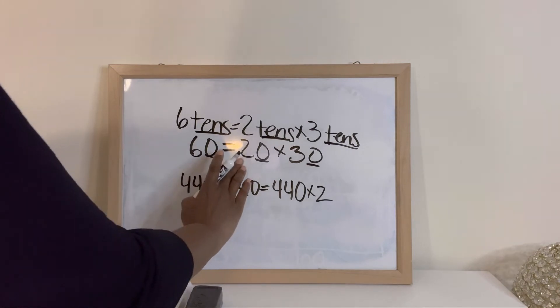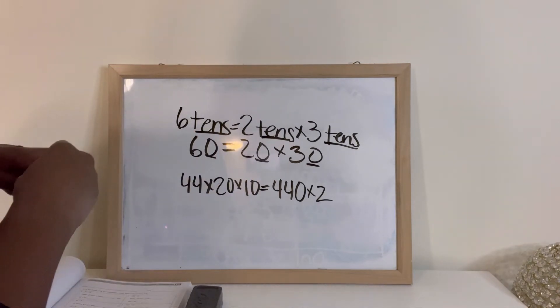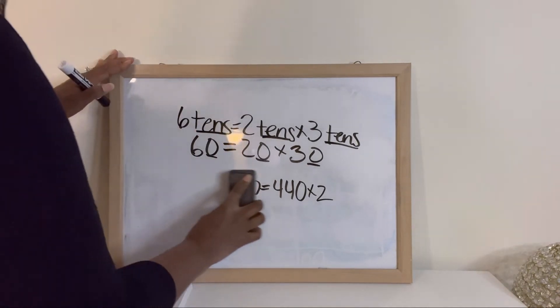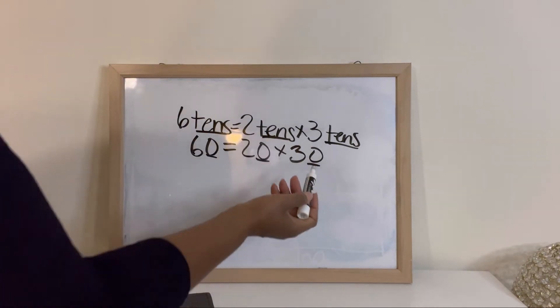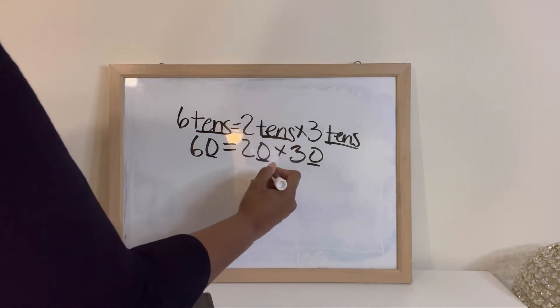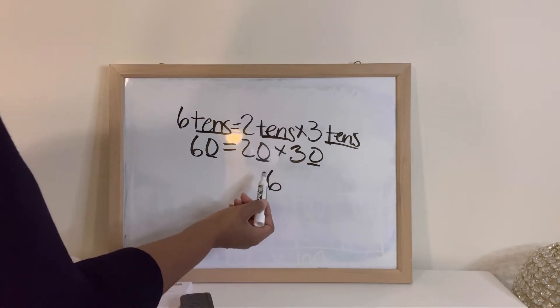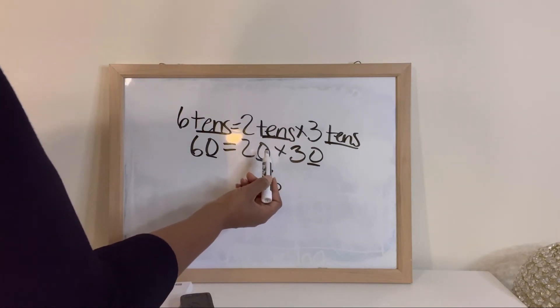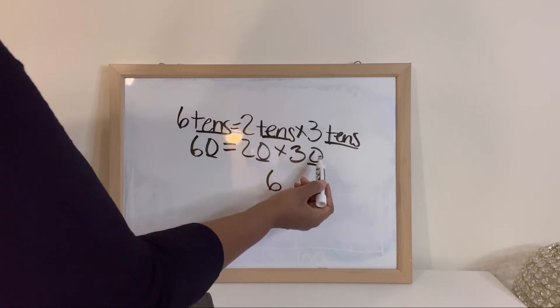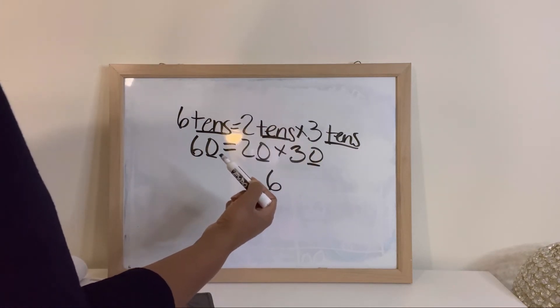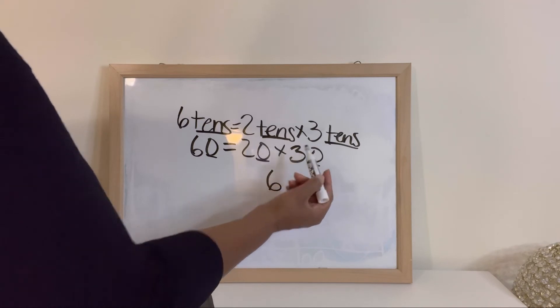So if we were to do 2 times 3, we will get 6. Then if we count our factors, we will see that we have one, two. If we count the zeros in our factors, we'll see that we have one, two zeros.